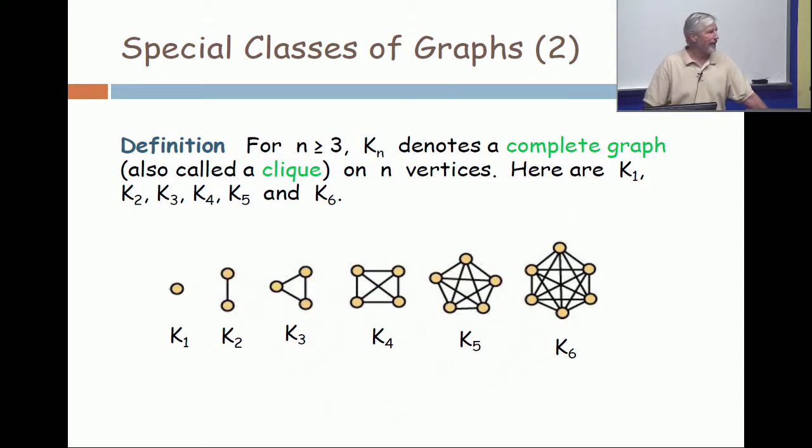For n greater than or equal to 1, Kn denotes the complete graph. And here we're borrowing the hard K from complete like in German, because the soft C for cycle has already been used. So Kn is a complete graph on n vertices.